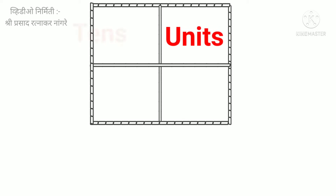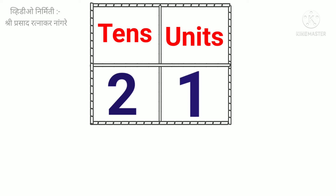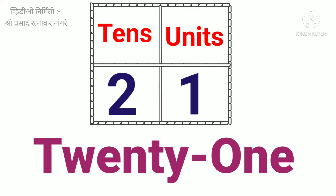Units. Tens. Two tens. One unit. Twenty-one. T-W-E-N-T-Y-O-N-E. Twenty-one.